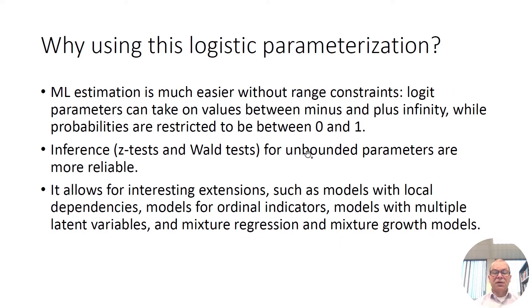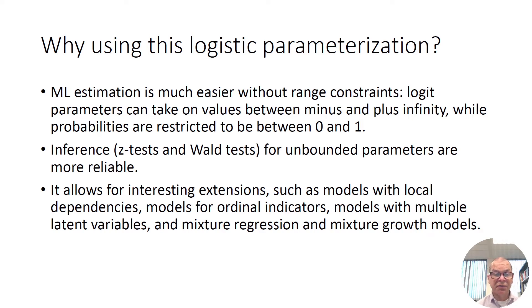Why do we use this logit parameterization? We are using maximum likelihood estimation to obtain the parameters of a Leidenklaas model. Maximum likelihood estimation is much easier if you don't need to impose range constraints on the parameters you are estimating. Logit parameters can take on values between minus and plus infinity, so there is no range constraint involved, while probabilities are expected to stay within a 0-1 range. So estimating probabilities with maximum likelihood is more complicated than estimating logit parameters.